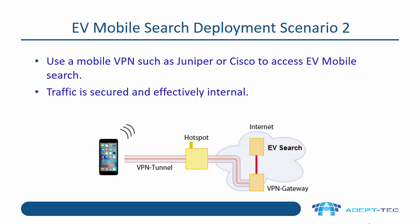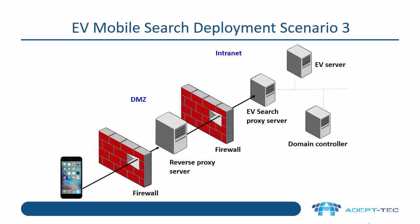If neither of the first two deployment scenarios are possible, then there is a third one provided by Veritas — to install what we call an EV Search proxy server. This is a server on the inside of the network which just has the search access components installed and nothing else. The great thing about this is there's no requirement to publish the EV server on the internet.